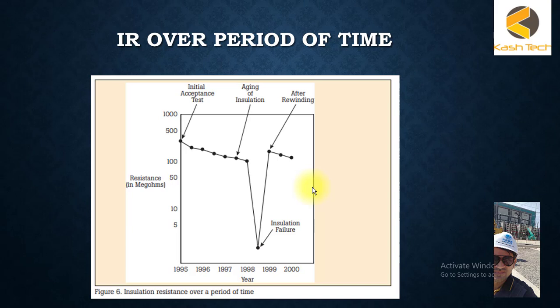Here you can see an example where one equipment is tested and they have kept the record. You can see they tested the equipment first time in 1995, kept the reading, and then tested it gradually. You can see there's a pattern - insulation is going down gradually. This gradual resistance decrease is okay and perfect; there is nothing to worry about.